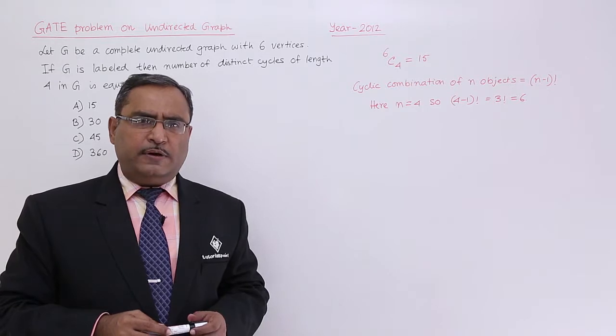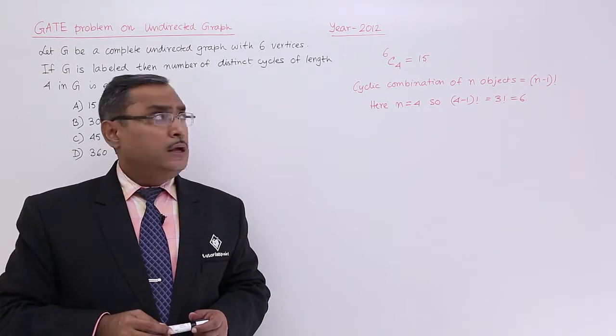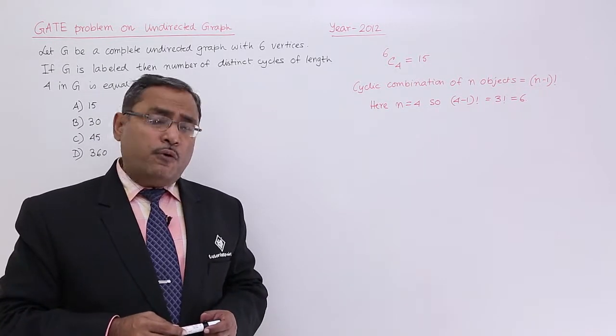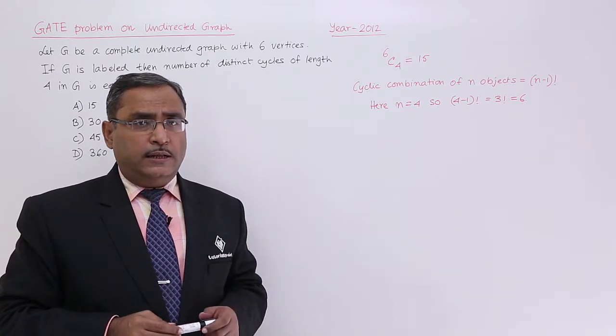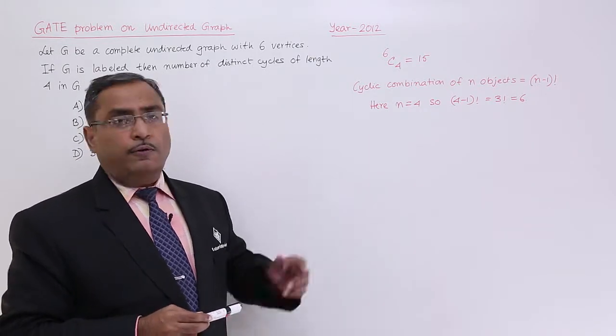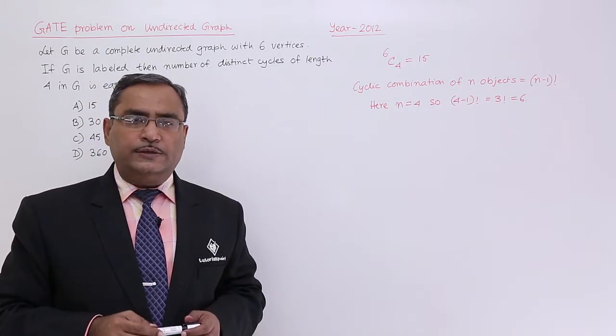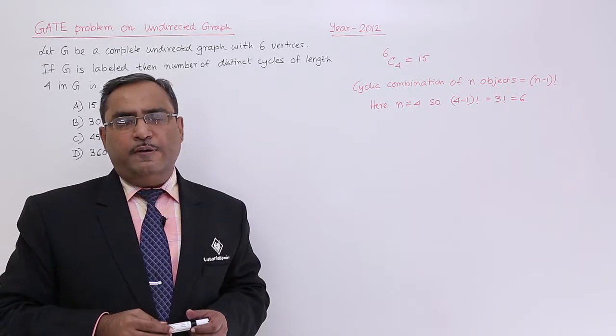Out of these 6 vertices, if I am to select 4 vertices, then the combination will be 6C4, and if you calculate 6C4, it is nothing but 15.